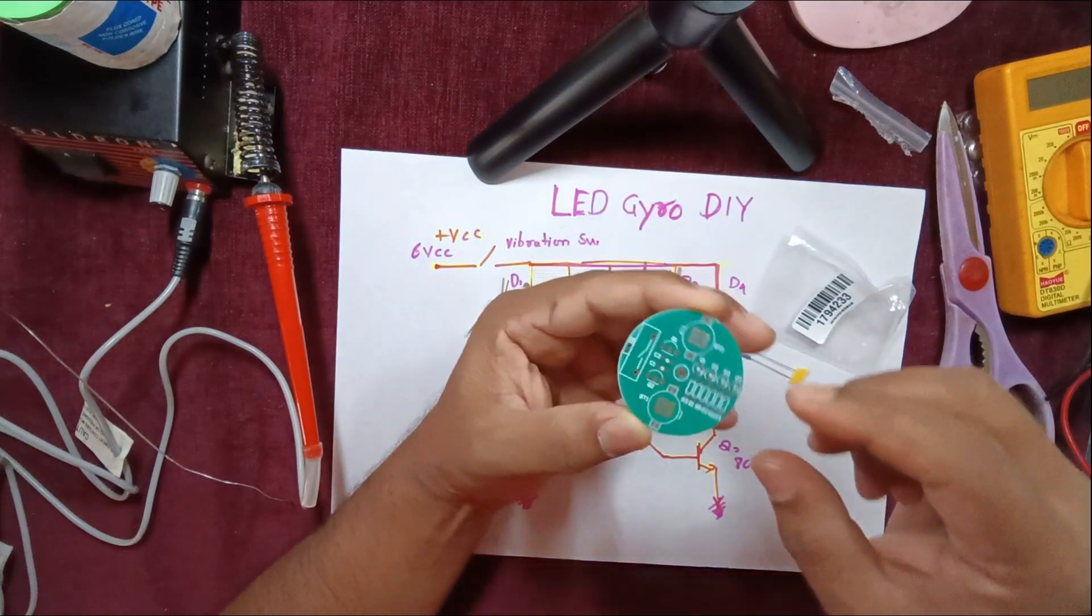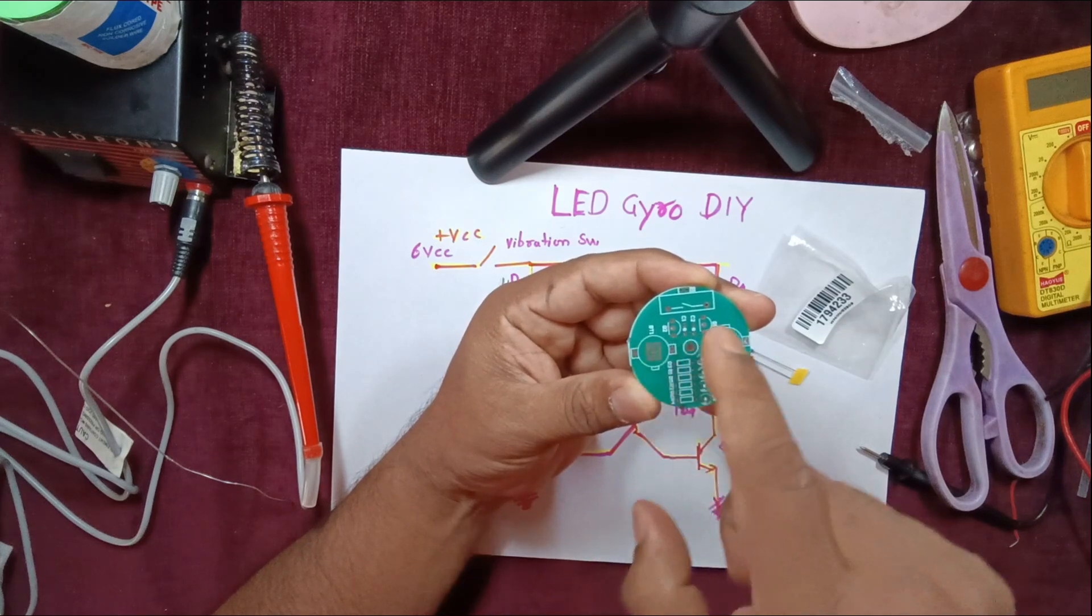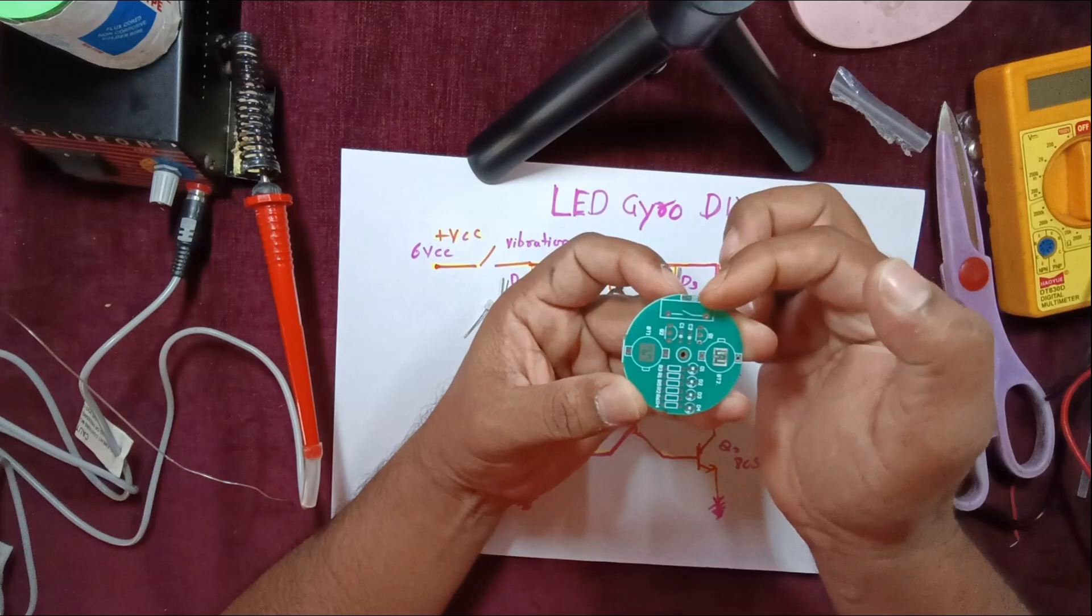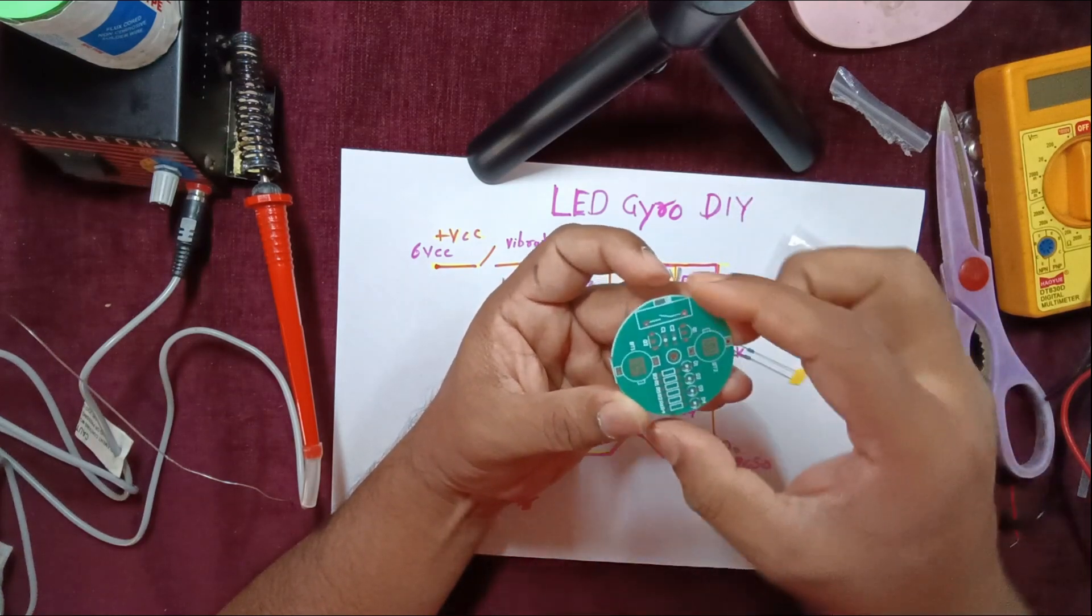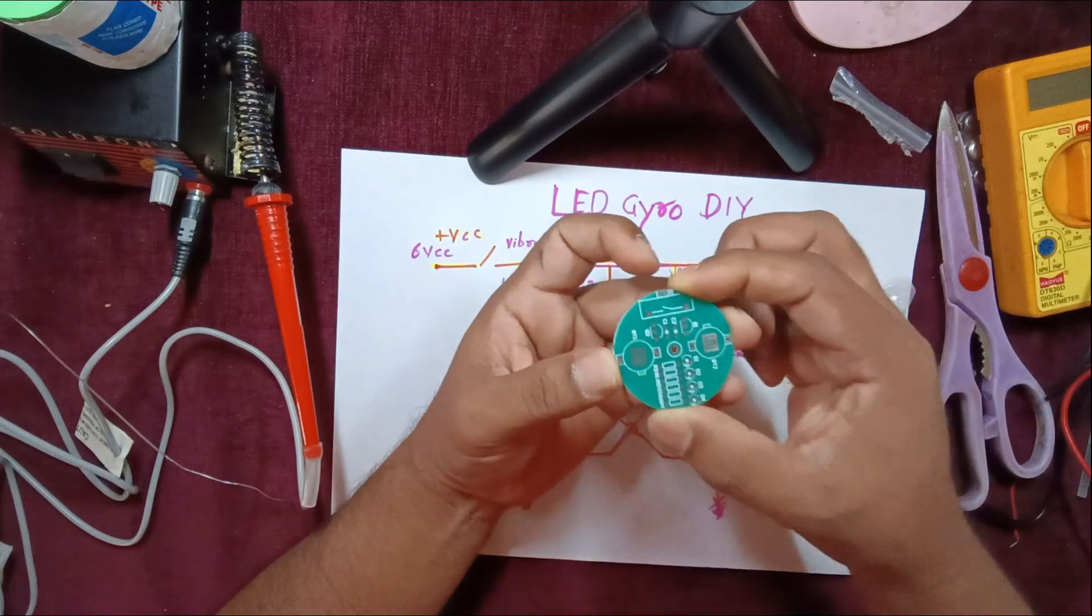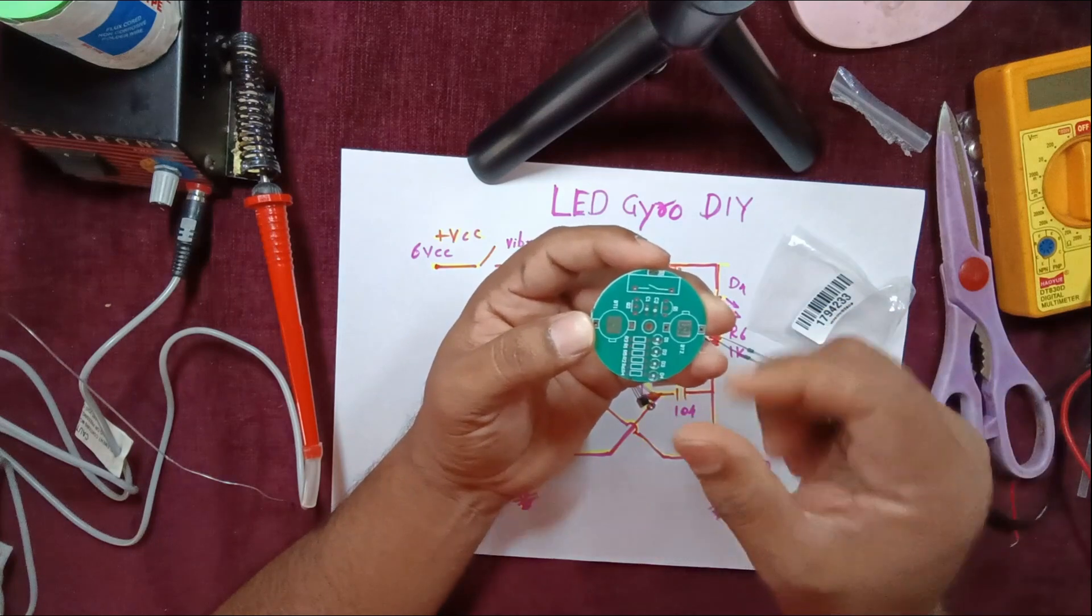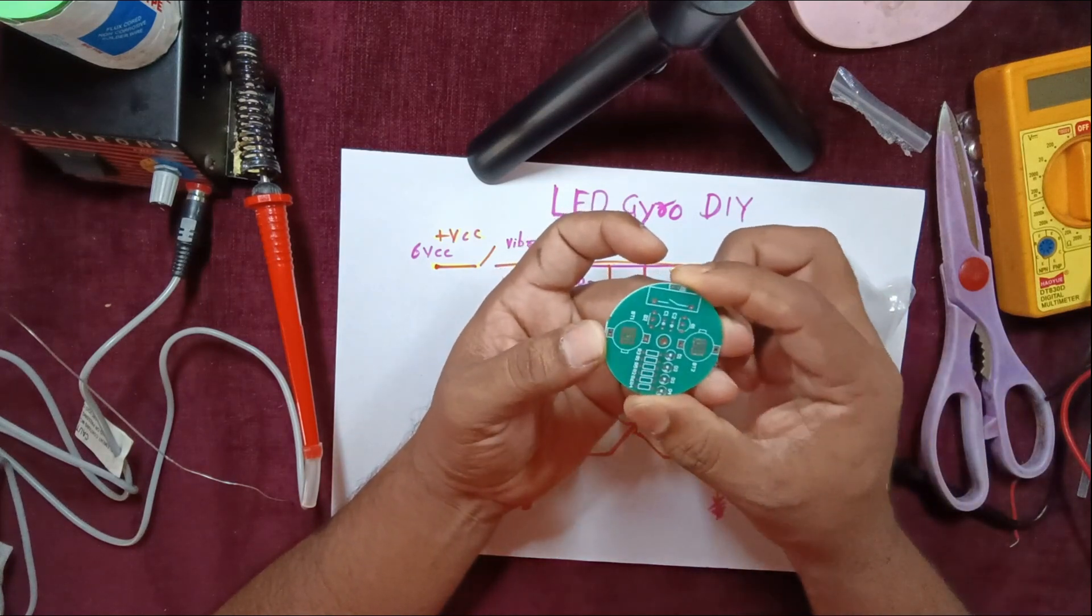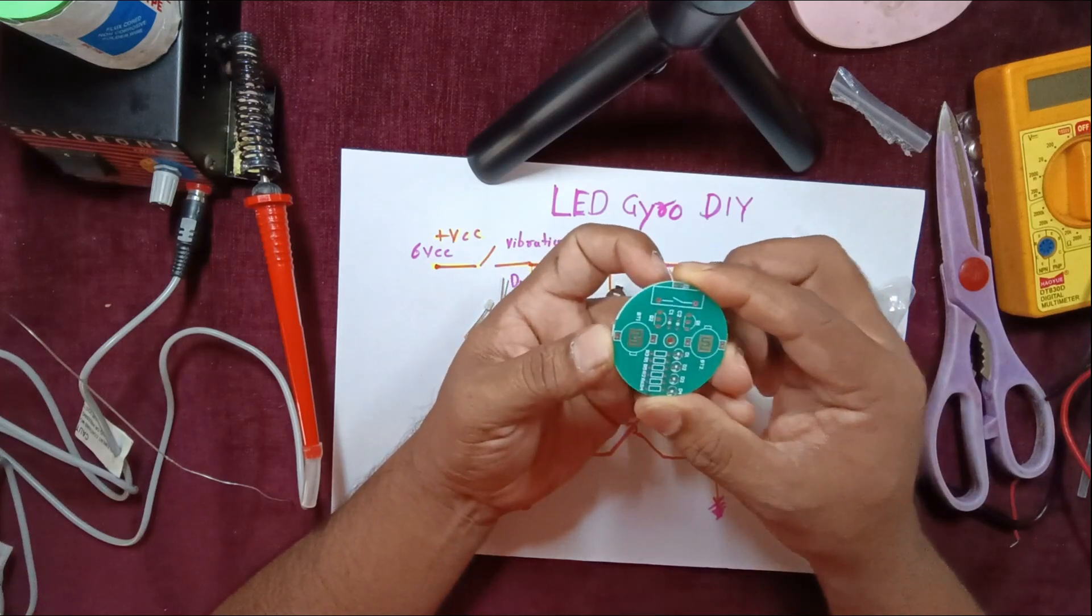If you look at the circuitry, the two batteries are placed opposite to each other which maintains the balance. On one side you will find the vibrator sensor and transistor placement, and on the other side you will find the LEDs. It has got a well-balanced design so when you apply centrifugal force it will start rotating very nicely.